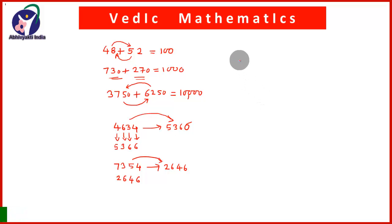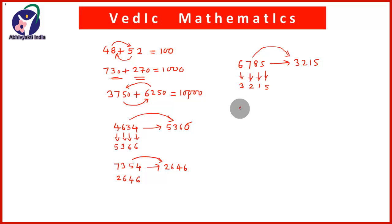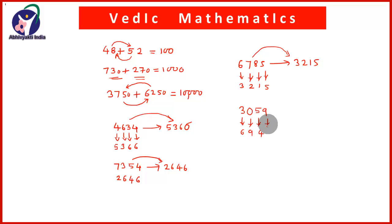Take one more example: 6,785. So: 6 and 3 give 9; 7 and 2 give 9; 8 and 1 give 9; 5 and 5 give 10. So 3,215 is the complement of 6,785. If the number is 3,059: 3 and 6 give 9; 0 and 9 give 9; 5 and 4 give 9; 9 and 1 give 10. Therefore the complement of 3,059 is 6,941.